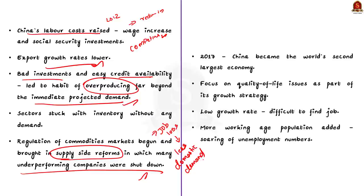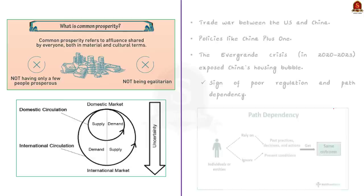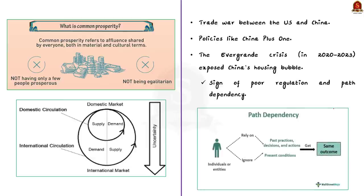The next challenge is the shift in growth strategy. China shifted its growth strategy away from export-driven and infrastructure-focused growth towards a focus on improving the quality of life of its citizens. This impacted job creation and the disposable income of people was also affected. The next challenge is the trade war and the China-plus-one policy.